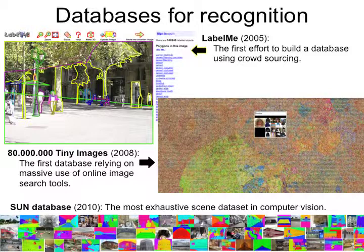People can go to this online tool and label different objects for us, so that we don't have to do the work of labeling. This is a snapshot of the tool, and somebody has gone there and labeled all these different things like trees with all these different details. These are people who get no money for doing this, so they have a lot of free time.